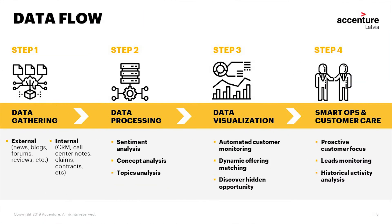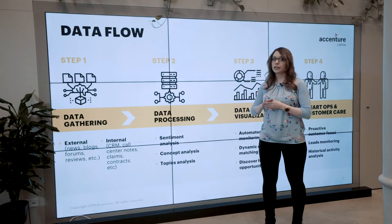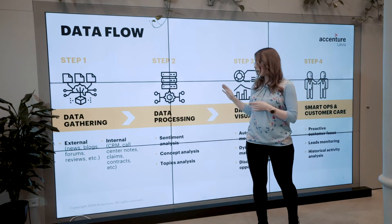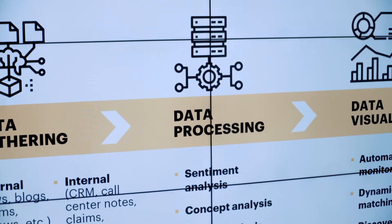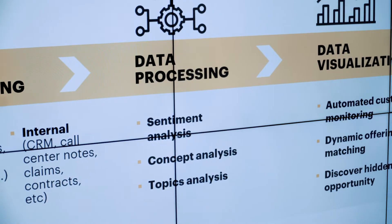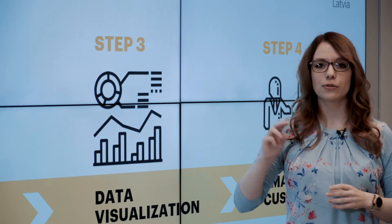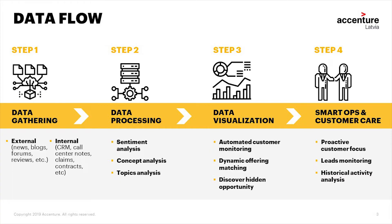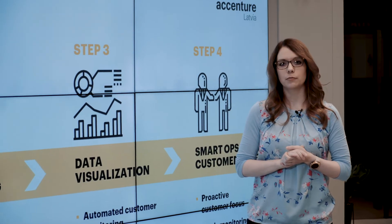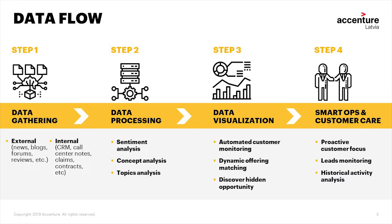The solution starts with step one: data gathering from internal and external sources. Internal ones can be CRM and call center nodes, while external ones include news, blogs, and forums. In step two, data goes to our data processing phase which consists of sentiment analysis that analyzes text based on predefined rules looking for categories. Then data goes to step three where it gets visualized on our dashboards. In step four, analyzed data is streamed to our CRM system where it gets recommendations for further offers, or in case of any risk or issue, it gets flagged to our customer care system.